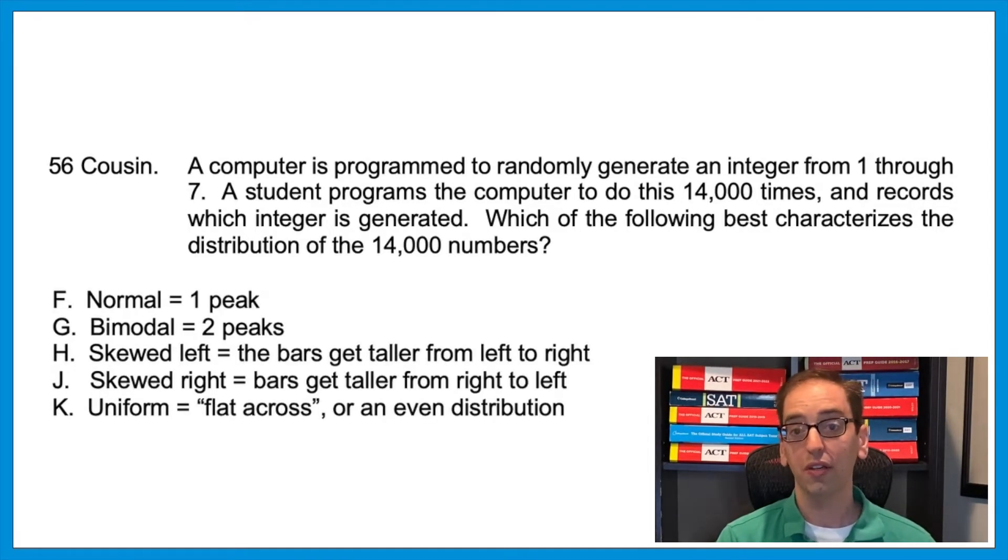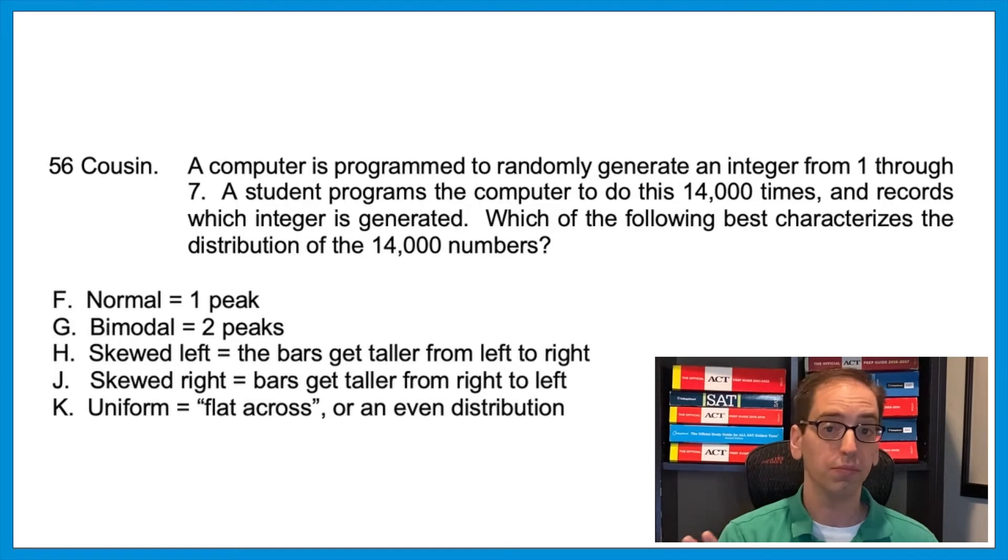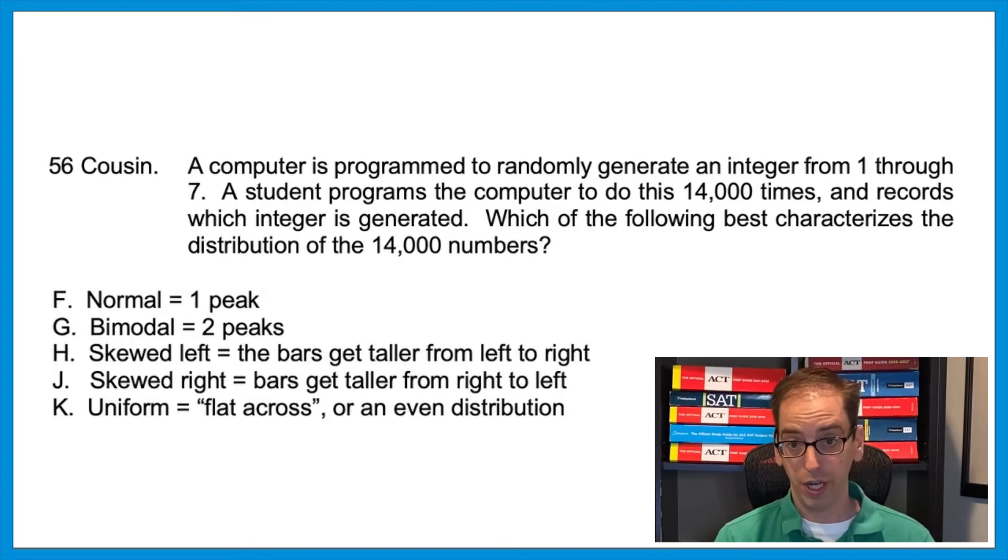For a normal distribution, think of a distribution having one peak, like a bell curve or a standard deviation plot. Bimodal would have two peaks. Think of the word bimodal, two modes, two numbers that would peak in the data. Skewed left means in the distribution, the bars would get taller from left to right. And skewed right goes the other way, bars getting taller from right to left. And uniform is data that is flat across, or for the most part, an even distribution. So which one would we have here? If the numbers one through seven are all going to be randomly generated, then sooner or later, we can expect them to all come up roughly the same number of times. It won't be exact. Some will be a little more, some will be a little less. But sooner or later, we can expect that those numbers would all appear, ballpark, about the same amount of times. That's going to be a uniform distribution. The answer is K. And that's very ACT of them. It's not hard. It's just random.